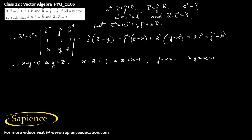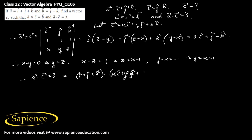Therefore y and z are both equal to x - 1. Now applying a · c = 3: since a = î + ĵ + k̂ and c = x î + y ĵ + z k̂, the dot product gives x + y + z = 3.